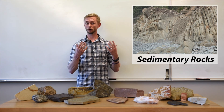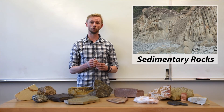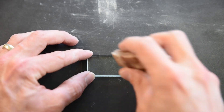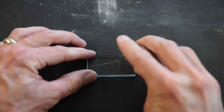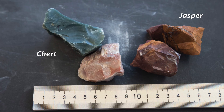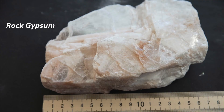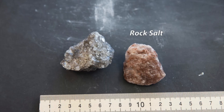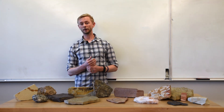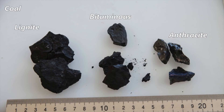If the main mineral component is quartz or silica in crystalline form — hint, the rock will scratch glass — then the rock is named chert, flint, jasper, or agate. Rock gypsum is entirely crystalline gypsum, precipitated from solution, primarily by evaporation. And rock salt is halite, precipitated by evaporation. Finally, varying types of coal are all composed of altered plant or peat fragments.